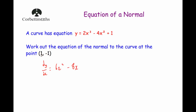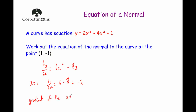If we substitute in x equals 1, we find the gradient of the tangent. When x equals 1, dy/dx equals 1 squared is 1, times 6 is 6, then subtract 8 times 1 is 8. And 6 subtract 8 equals negative 2. So the gradient of the tangent is equal to negative 2. The gradient of the normal is the negative reciprocal of this — because it's negative it becomes positive — so it's equal to a half.